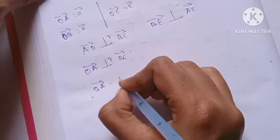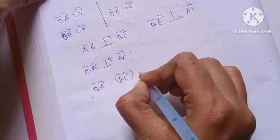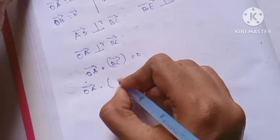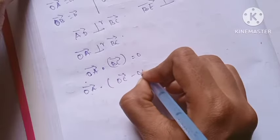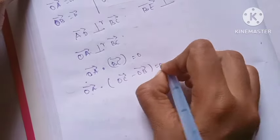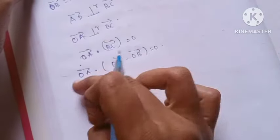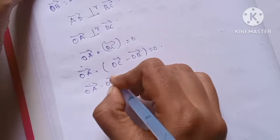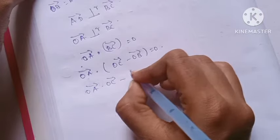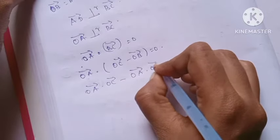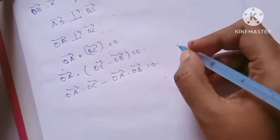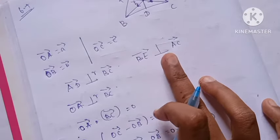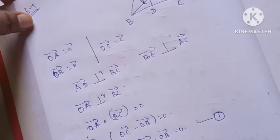OA vector dot BC vector, using position vectors, equals OA dot (OC minus OB) equals zero. That is, OA vector dot OC vector minus OA vector dot OB vector equals zero. This is equation 1.